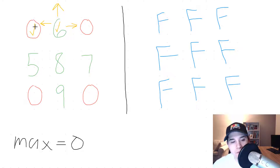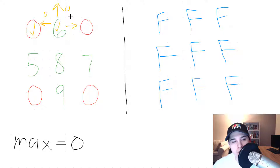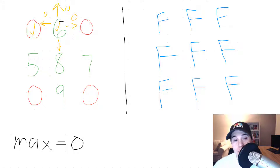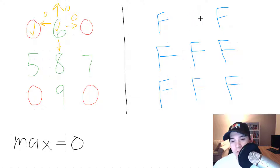Looking at node 6: to the left is a 0, so max path sum to the left is 0. Above is out of bounds, also 0. To the right is also 0. When we check down, we find node 8. Keep in mind, now that we've visited node 6, we update the corresponding Boolean array entry from false to true, indicating we've visited this cell.